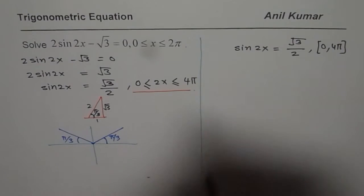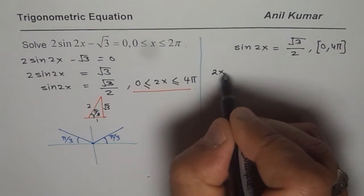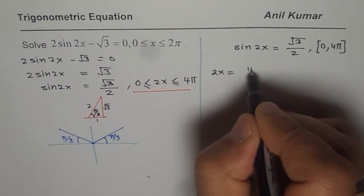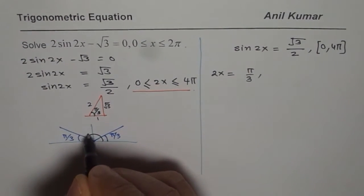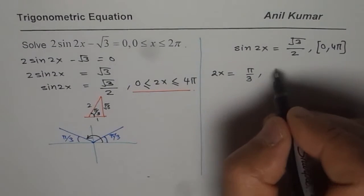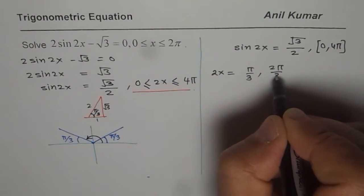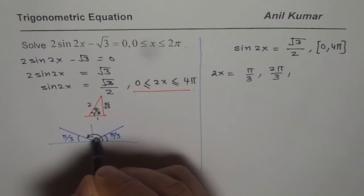So what we get here is 2x equals π by 3 for the first round, and that is 2π by 3, right? And then we have to go 2π plus π by 3.